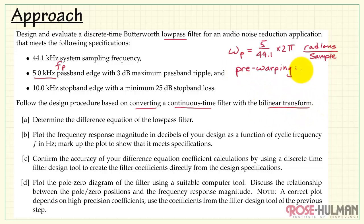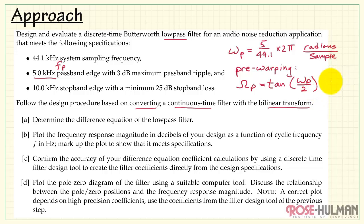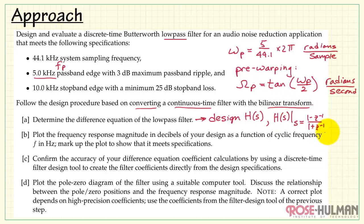To apply the Bilinear Transform, we need to first pre-warp this frequency to calculate the continuous-time passband frequency, capital Omega_p. It equals the tangent of the discrete-time passband frequency, little omega_p, divided by 2. This has units of radians per second. We then design the continuous-time transfer function for the filter, and apply the Bilinear Transformation by substituting S equals 1 minus Z-inverse divided by 1 plus Z-inverse to obtain H(Z). We can then translate the system function into the difference equation.